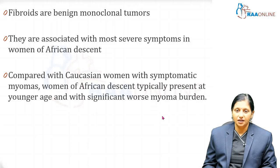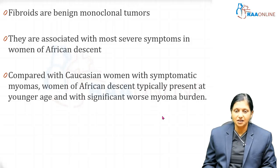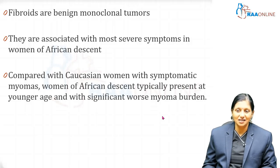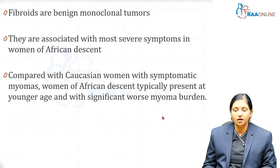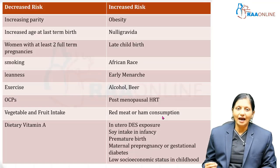Fibroids in women of African descent are associated with high FSH and LH, or high levels of gonadotropins, compared with Caucasian women with symptomatic myomas. Women of African descent typically present at a younger age and with significantly worse myoma burden.